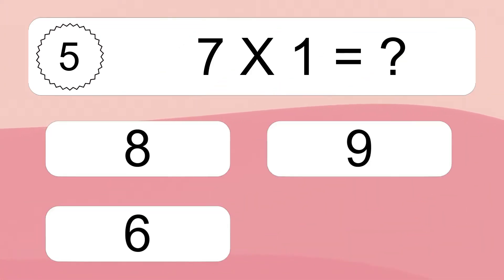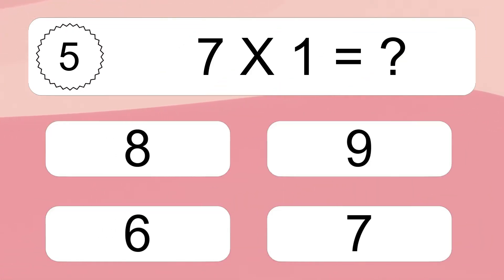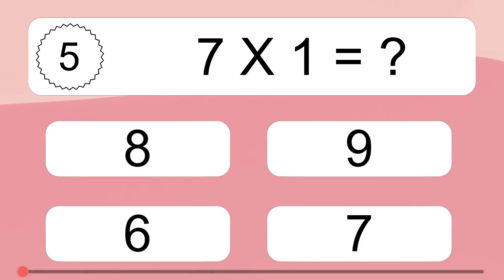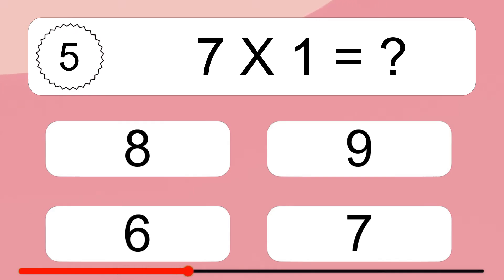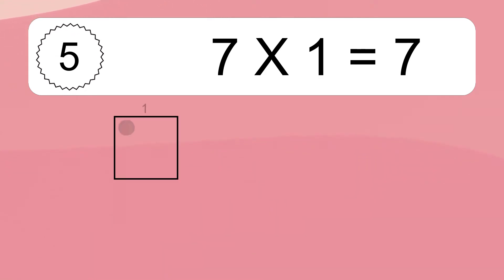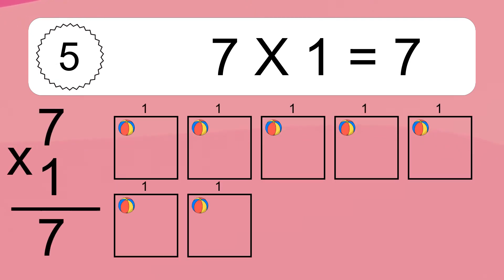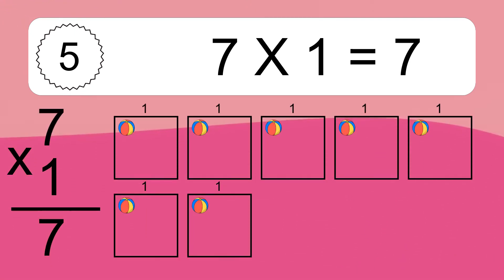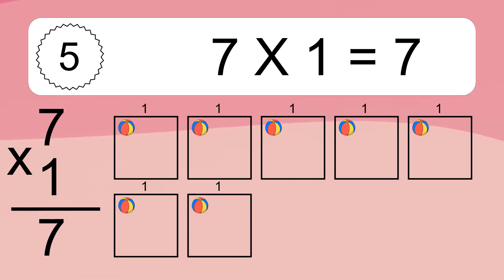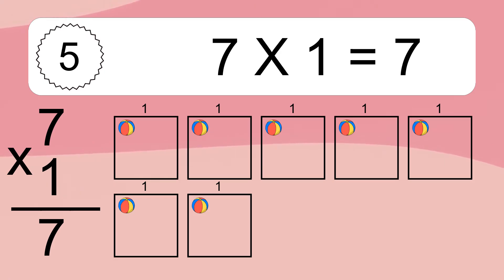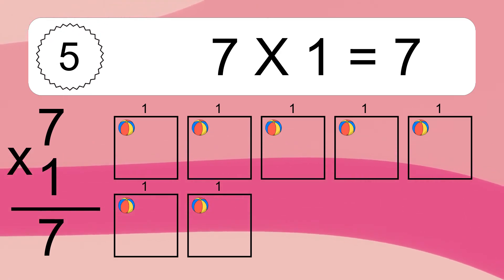7 times 1 equals what? 7 times 1 equals 7. We have 7 boxes, and each box has 1 colorful ball inside. If you count all the balls in all the boxes together, you will have 7 times 1 balls. This equals 7 balls.